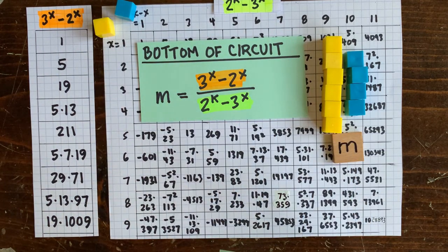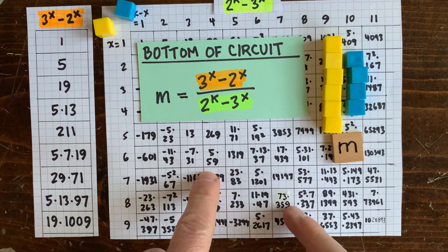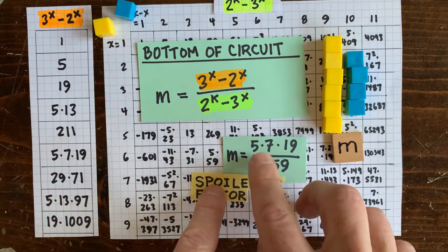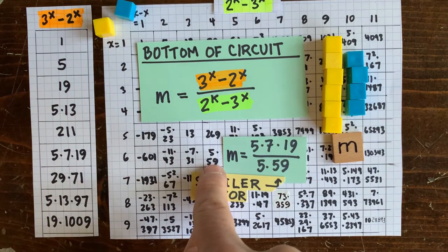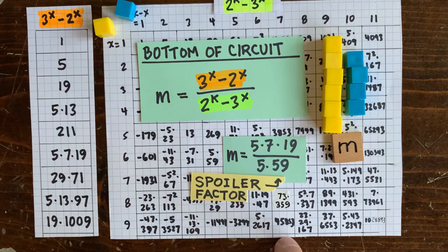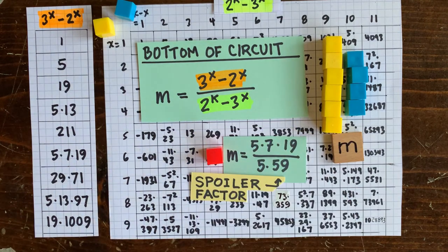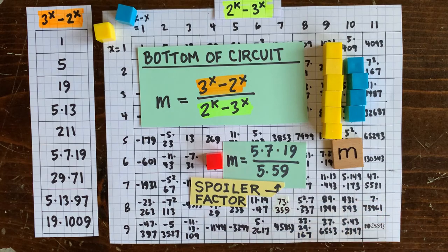The bottom of that circuit has the value 5 times 7 times 19 divided by 5 times 59. We know that's not an integer because 59 is a spoiler. So we can put a red block on this cell and rule out a circuit of that shape. What we want to do is rule out all the circuits on this whole infinite chart.